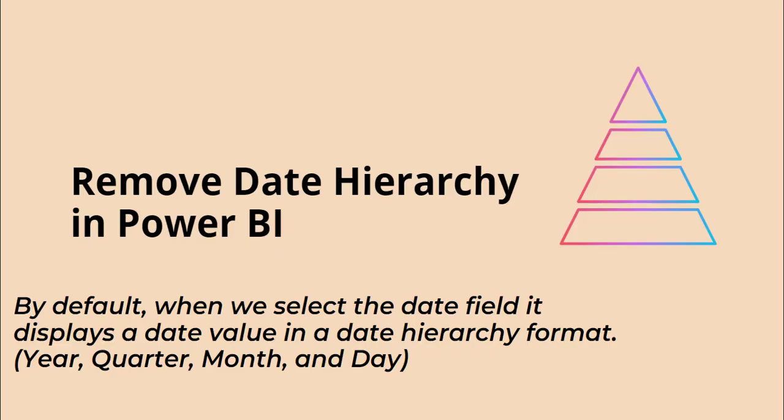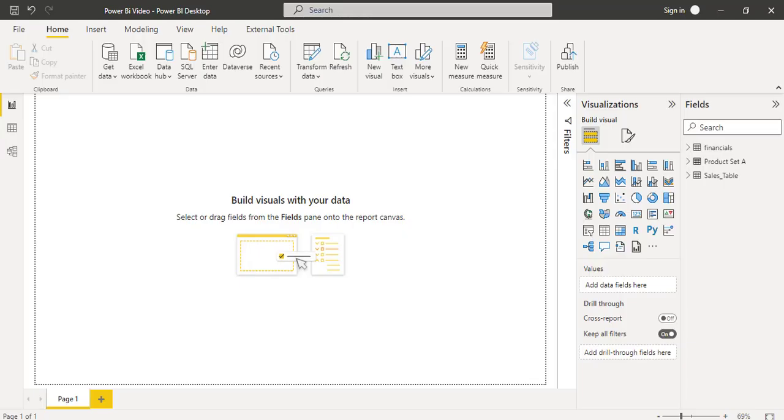So let's begin with what is date hierarchy in Power BI. The date hierarchy has four different formats: first it displays in the year format, then quarter, month, and day. When we drag and drop the date field into the field section, by default it displays in these four date hierarchy formats. Now we will see how to remove it.